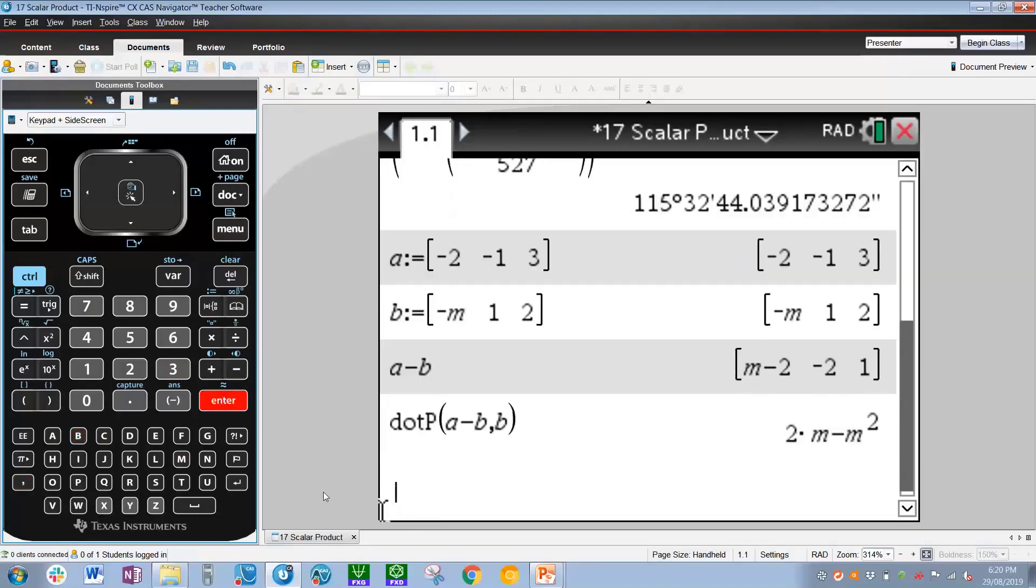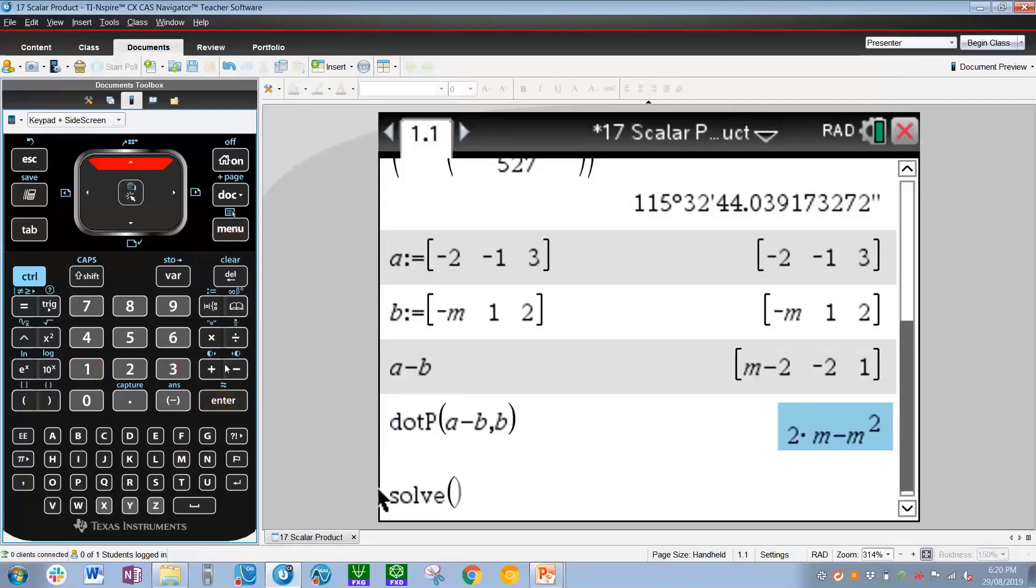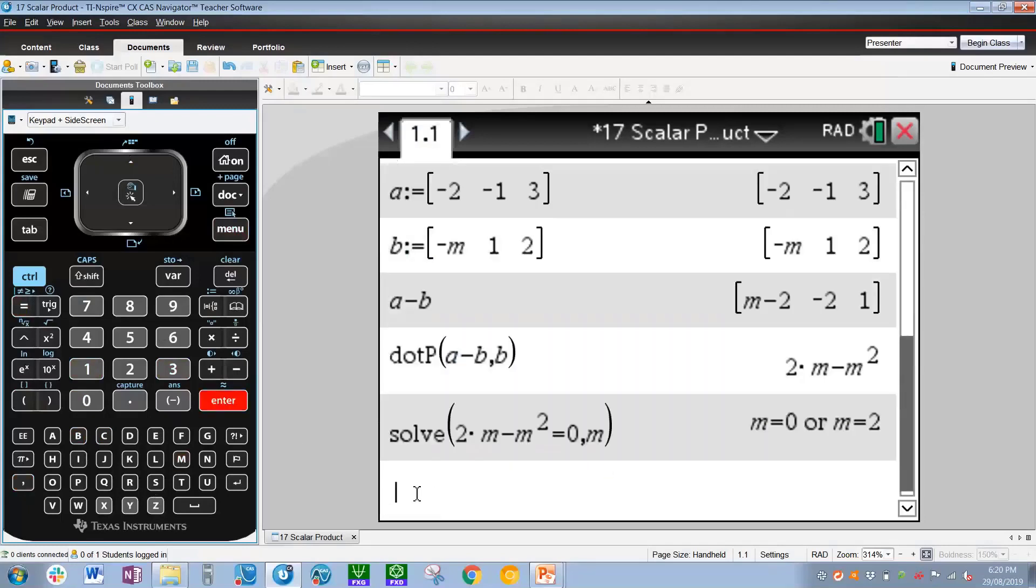So to solve that, to get the value of m, we'll go to menu 3, 1. Press up, enter equals 0, m. There we go. So the values of m that allow a and b to be perpendicular to each other are m=0 and m=2.